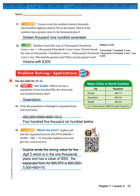Use the table for problems thirteen through fifteen. Which city has a population of two hundred fifty-five thousand one hundred and twenty-four? Greensboro has that population. Write the population of Raleigh in expanded form and word form. Raleigh is 405,612: expanded form is 400,000 plus 5,000 plus 600 plus 10 plus 2; in word form, four hundred five thousand six hundred and twelve.